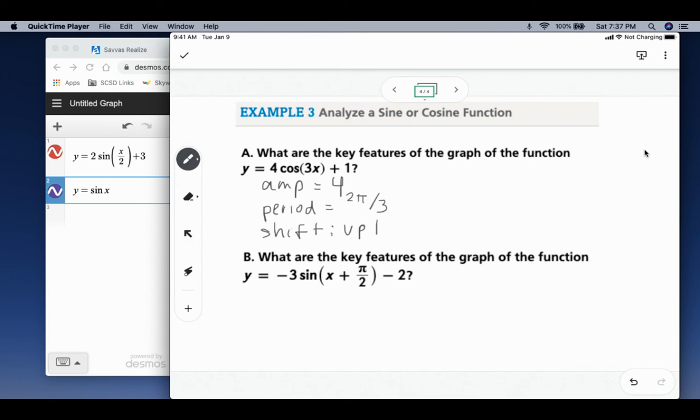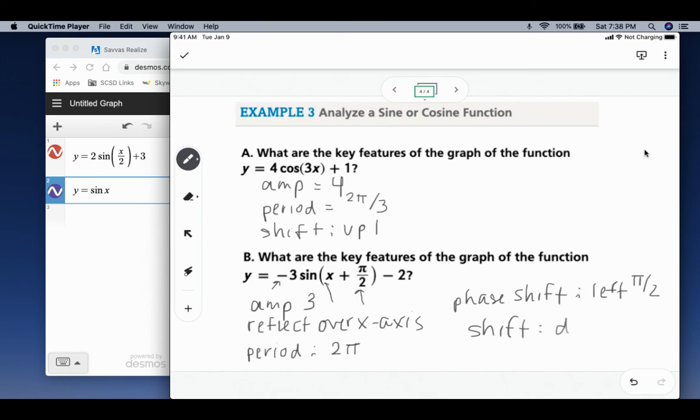So now part b, I'm going to have an amplitude of 3. I also need to address that negative out front. That means I'm going to have it reflect over the x axis. Then the period in this case, notice I do not have a number in front of the x value, so the period just stays what our parent function is, which is 2 pi. We're going to have a phase shift. We have plus pi over 2, so that means we're going to be moving to the left pi over 2. And finally, we have a vertical shift that's going to move it down 2.